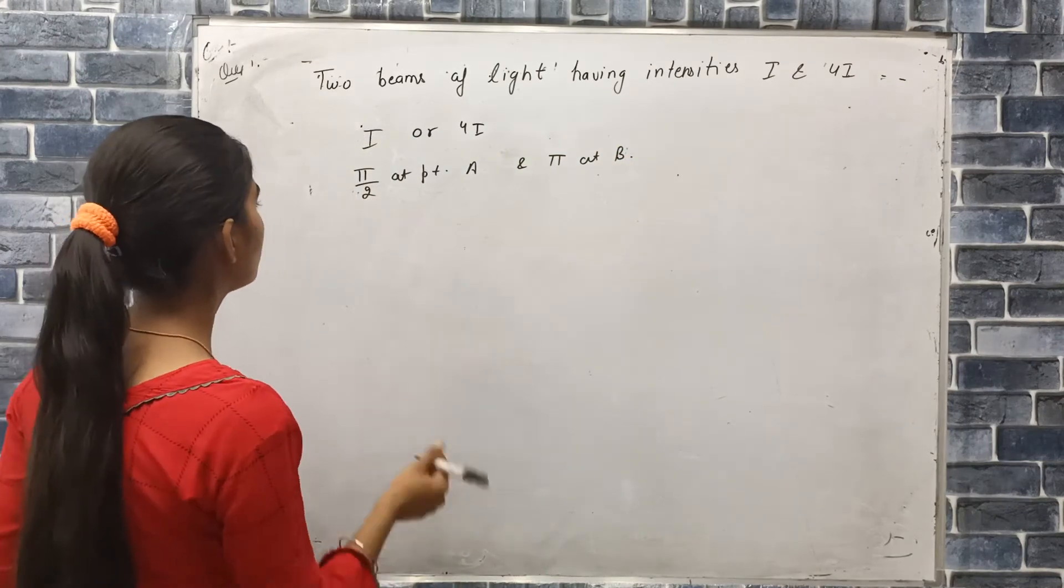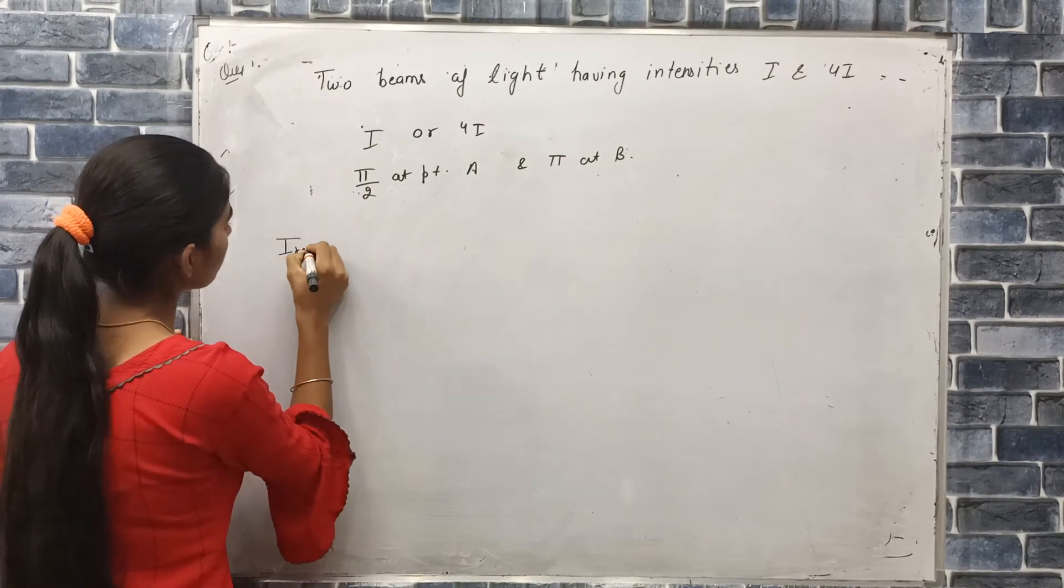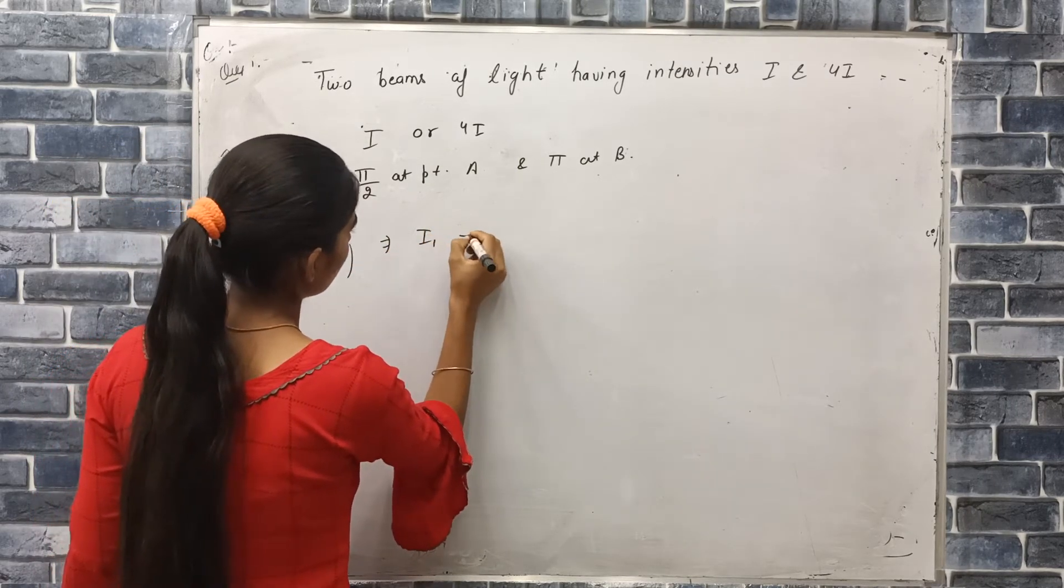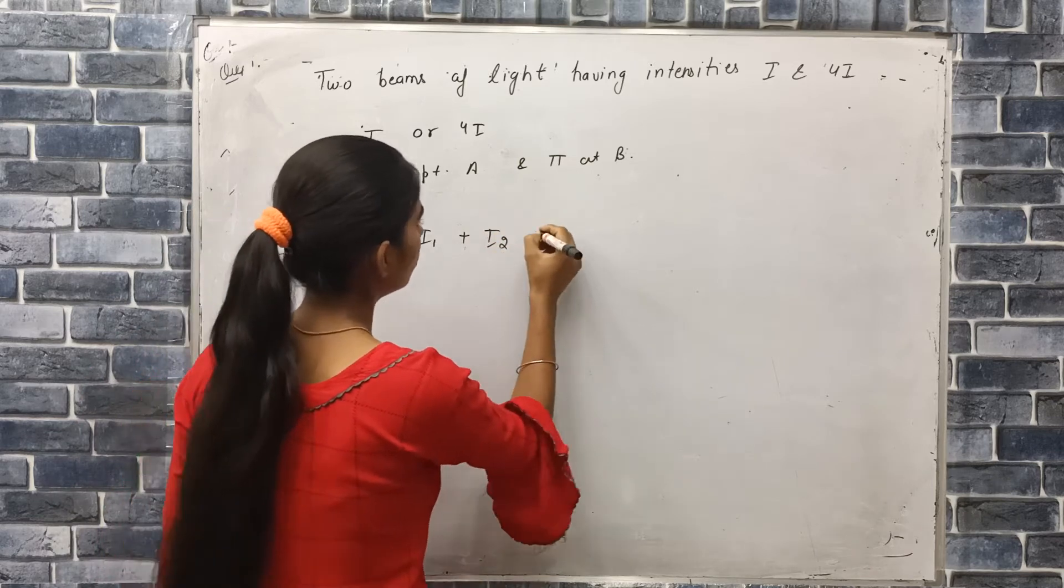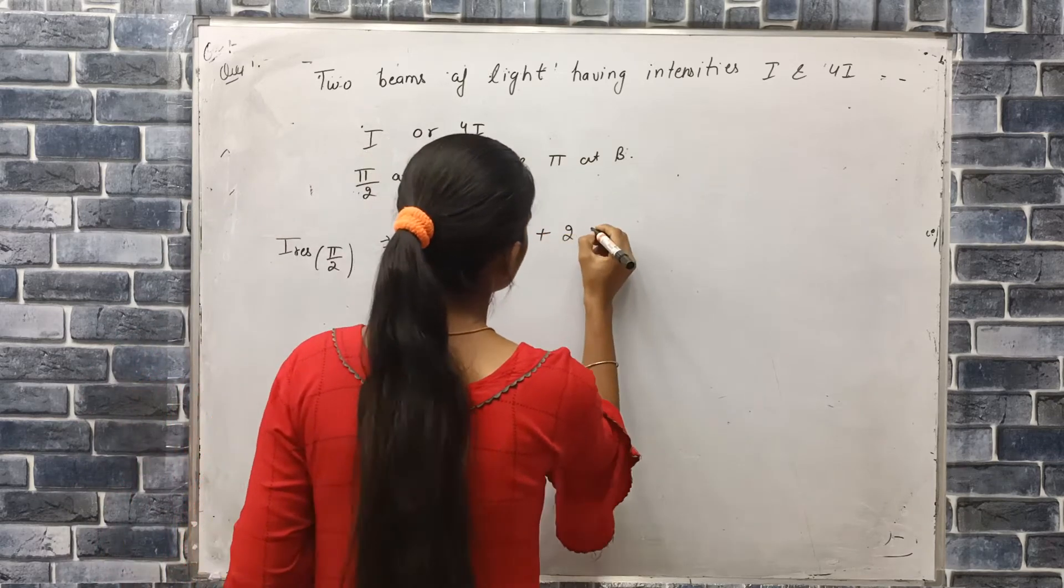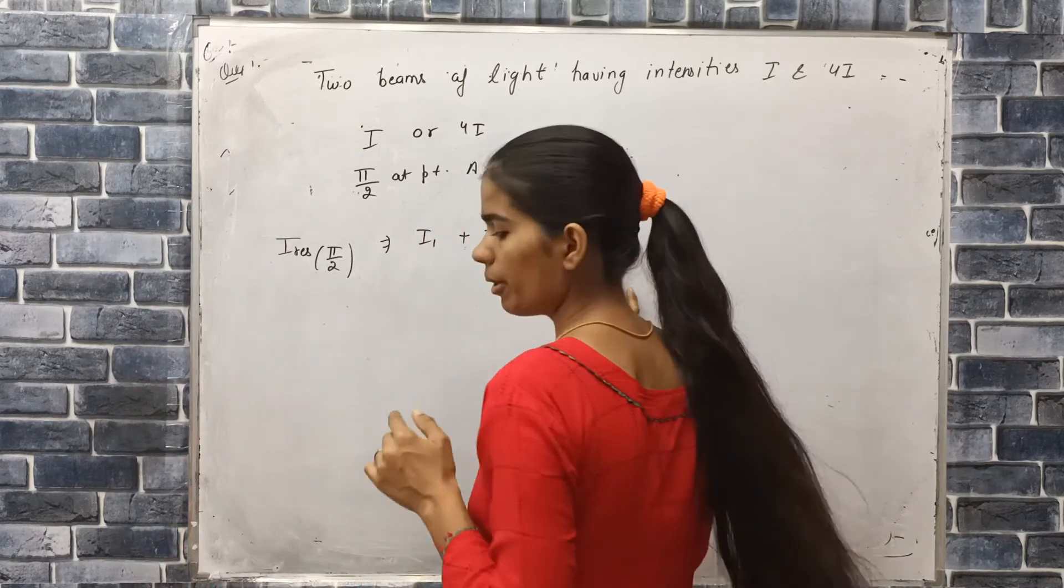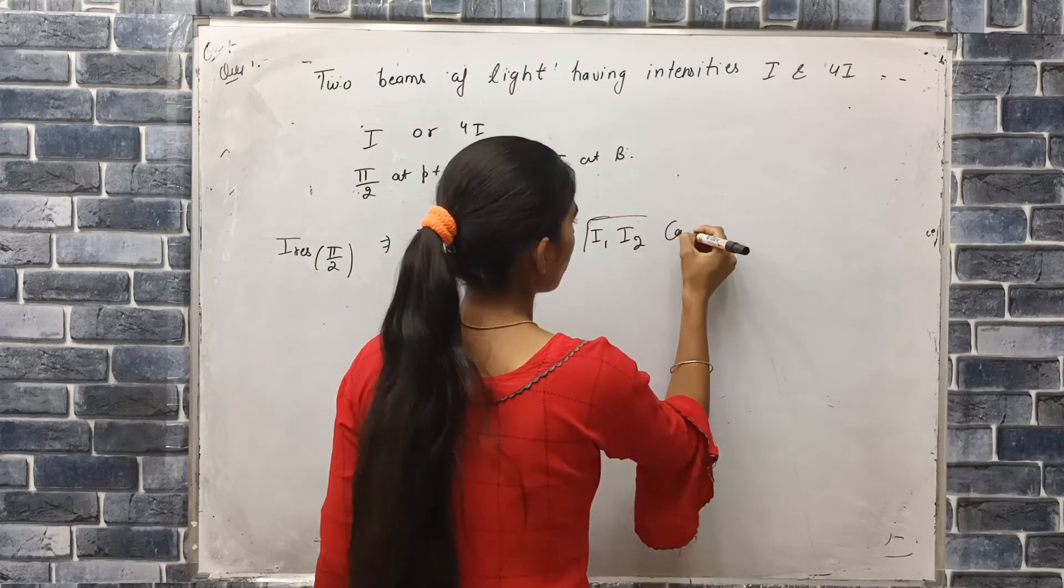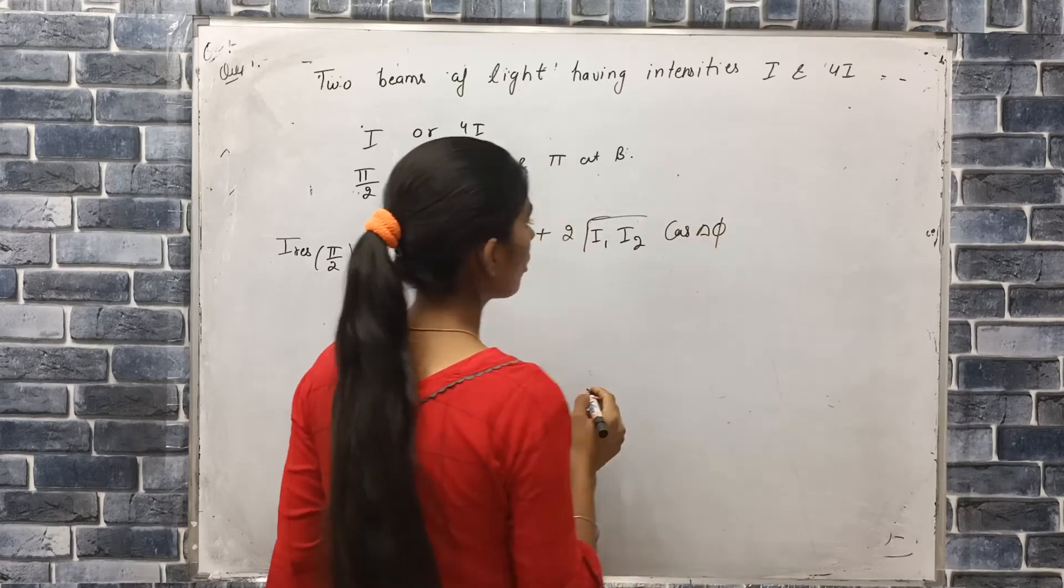For π by 2 and π, what will be the resultant intensity? At point A, what formula do we use? I1 plus I2 plus 2 root I1 I2 cos delta.